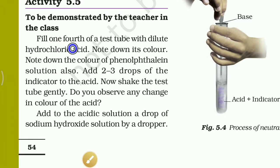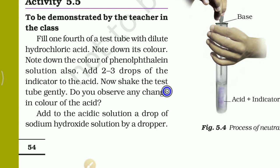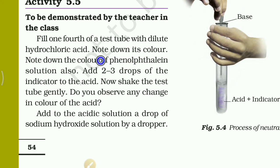Activity 5.5, to be demonstrated by the teacher in class: Fill one fourth of a test tube with dilute hydrochloric acid. You have to take a test tube and add a little bit of HCl, which is a very strong acid. Note down its color — HCl is colorless.